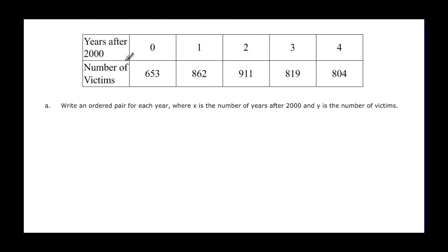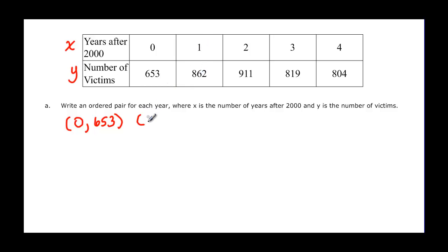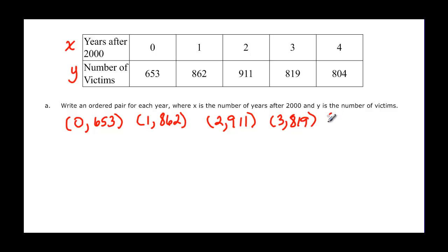Now let's interpret some ordered pairs. We need to write an ordered pair for each year, where x is the number of years since 2000 and y is the number of victims. So (0, 653) represents the year 2000 with 653 victims. Then (1, 862), (2, 911), (3, 819), and four years after 2000 there were 804 victims, giving (4, 804).